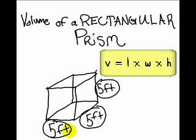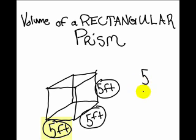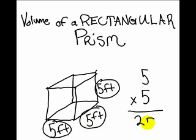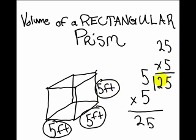Now this is length times width times height. You're going to take 5 times 5 equals 25, and then 25 times 5 equals 125.